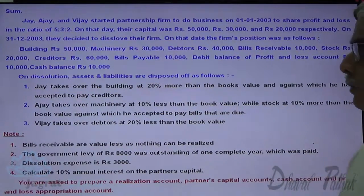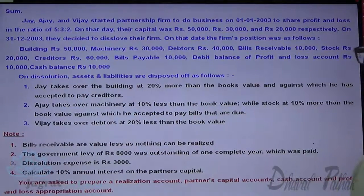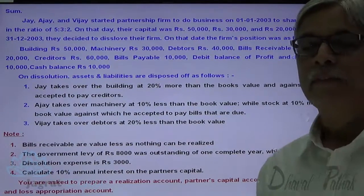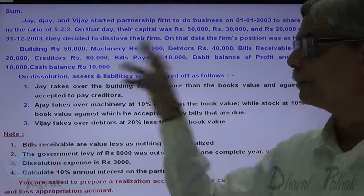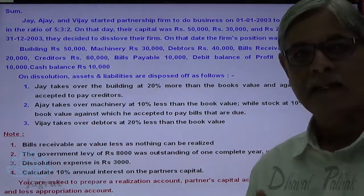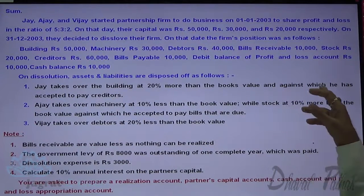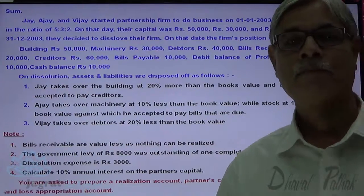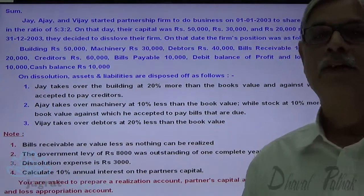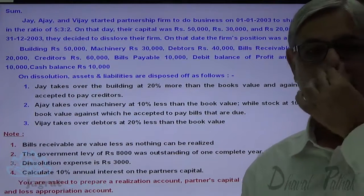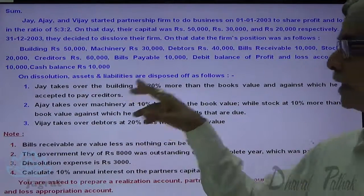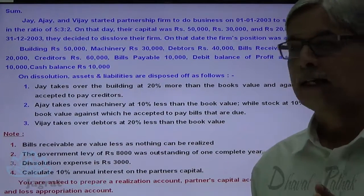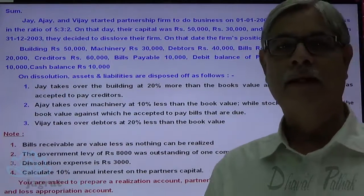All dissolution assets and liabilities were disposed of as follows. Jay takes over the building at 20% more than the book value, against which he has accepted to pay the creditors. When a liability is taken by a partner, the partner is a giver to the firm, so the partner's capital account will be credited for creditors taken over. The entry for creditors taken by Jay is: realization account debited to Jay's capital account credit.